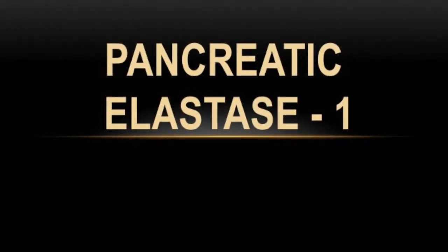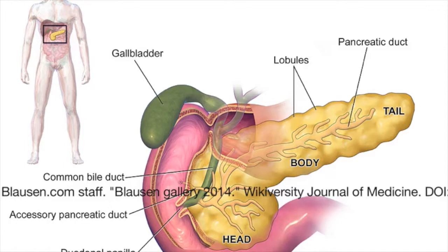It is produced in, you guessed it, the pancreas. From here, elastase is secreted into the duodenum.